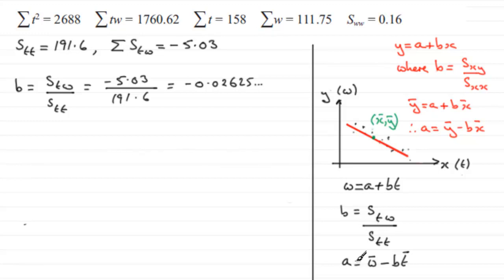So we need to now work out what a is, but to do that we need w bar, the mean of w, and t bar, the mean of t. So let's stop off and work out those. w bar, the mean of w. That's going to be the sum of all the w values divided by how many we've got, which is 10. And so we've got this value, sigma w, 111.75. So we've got 111.75. Divide that by 10. And obviously we've got 11.175. So there's w bar.